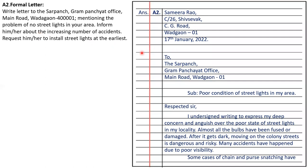In a formal letter we always write two addresses: sender's address and receiver's address, plus a subject line. Sender: Samira Rao, C26, Shoesaver, CG Road, Vardagao 01. Date: 17th January 2022. To: the Sarpanch, Gram Panchayat Office, Main Road, Vardagao 01. Subject: poor condition of street lights in my area.